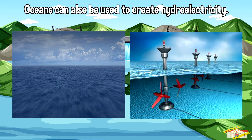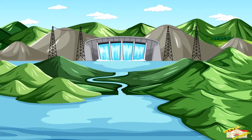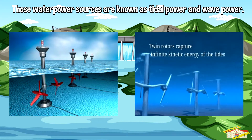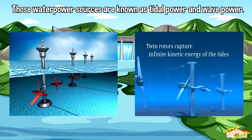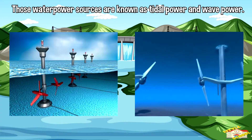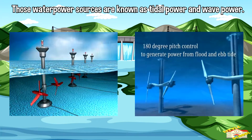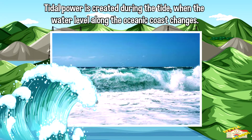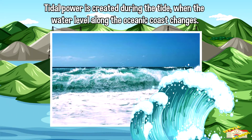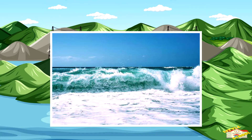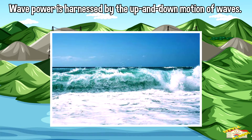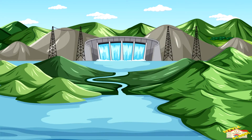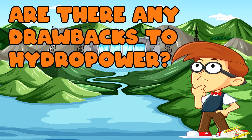Oceans can also be used to create hydroelectricity. Those water power sources are known as tidal power or wave power. Tidal power is created during the tide, when the water level along the oceanic coast changes. Wave power is harnessed by the up and down motion of waves.